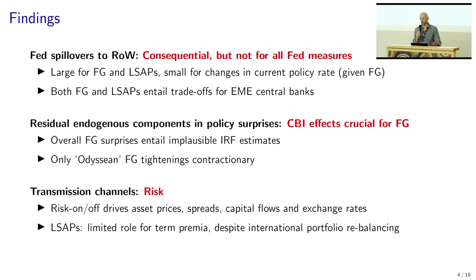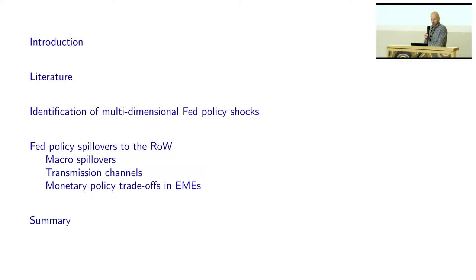The third set of findings: risk channels are really key for the transmission of Fed monetary policy to the rest of the world. This is true both for forward guidance and for LSAPs. That's particularly interesting because for LSAPs, international portfolio rebalancing has been proposed very recently as an important transmission channel. We do find evidence for international portfolio rebalancing, but the associated spillovers in term premia are relatively small.